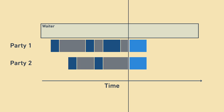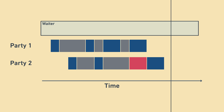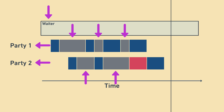But what about when both parties need help at the same time? The waiter can only help one of them, so the other one has to wait a little longer than if they were the only party — the time spent waiting is highlighted in red. The key insight here is that one waiter can serve multiple tables at the same time because each table has some downtime. In real life, restaurants might only have one waiter for every three tables, or even one for every six to eight depending on how casual the restaurant is.